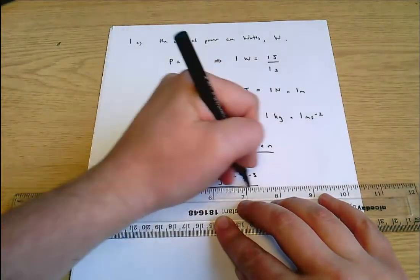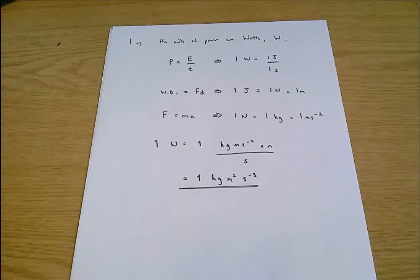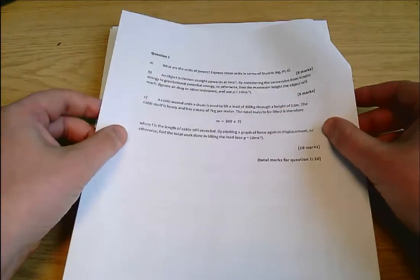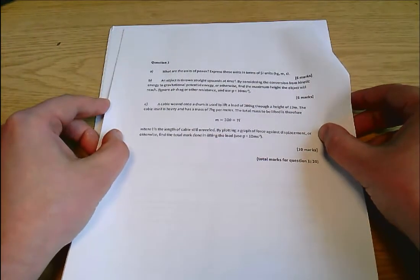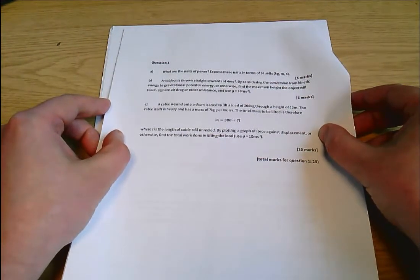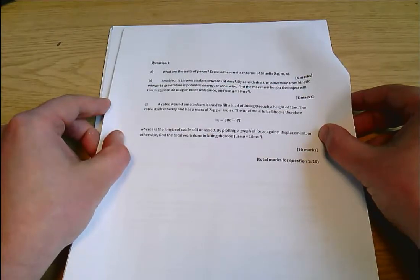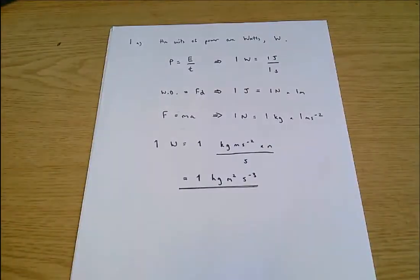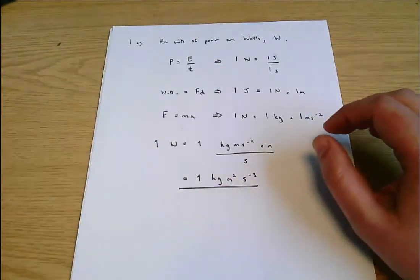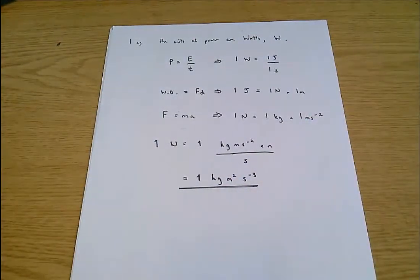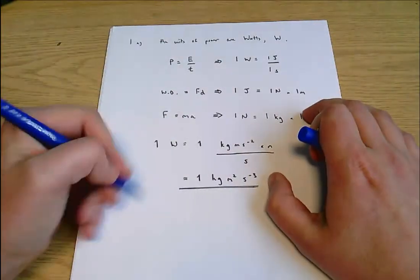Part B says an object is thrown straight upwards at four meters per second. By considering the conversion from kinetic energy to gravitational potential energy or otherwise, find the maximum height the object will reach. I'm going to do it the way that's suggested in the question. Usually if the question suggests something that will be a fairly sensible way to go about it.